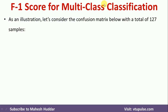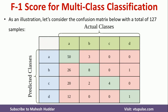We will consider a confusion matrix consisting of 127 samples and 4 classes: A, B, C and D. The actual classes are on one axis and the predicted classes are on the other. The value 50 means there are 50 class A examples that were classified as A — these are true positives for class A. Similarly, the value 8 means there are 8 class B examples classified as B, which are the true class B examples correctly classified. The same applies for classes C and D.